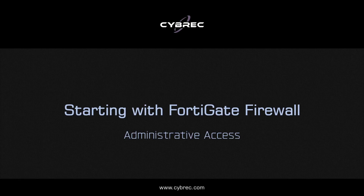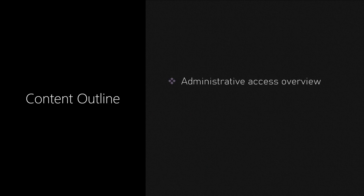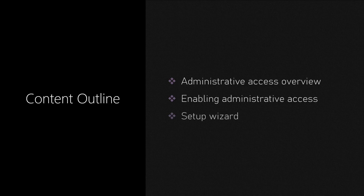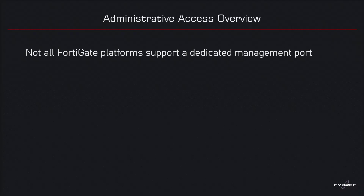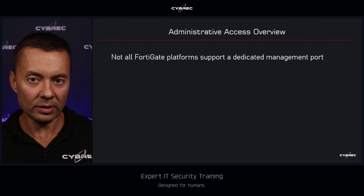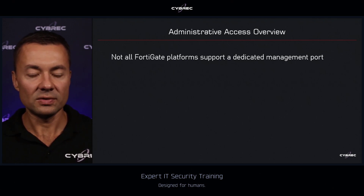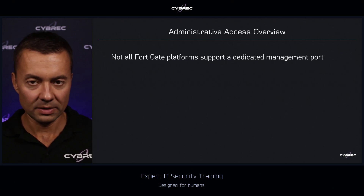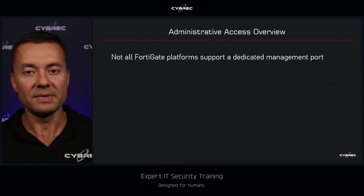Moving on, we will now talk about administrative access. I'm going to tell you about the different methods available for FortiGate OS administration, how to enable management access to the firewall, and go through what is known as a setup wizard. Not all FortiGate devices support a dedicated management port, which many organizations use for out-of-band administration — a dedicated interface separated from the data network and used just for administration.